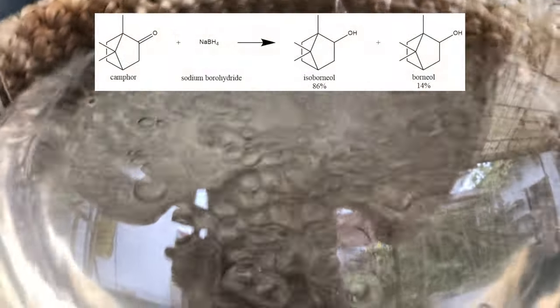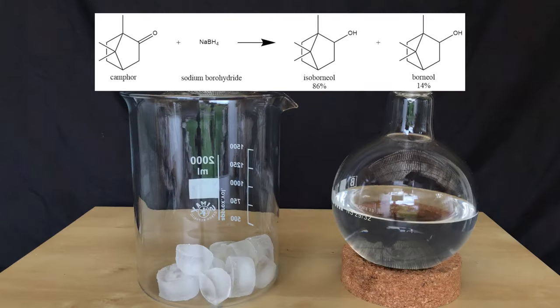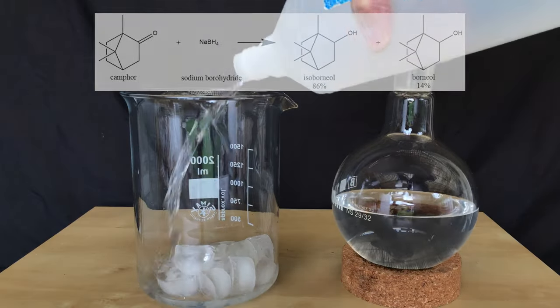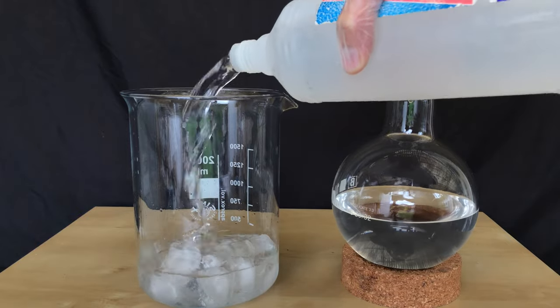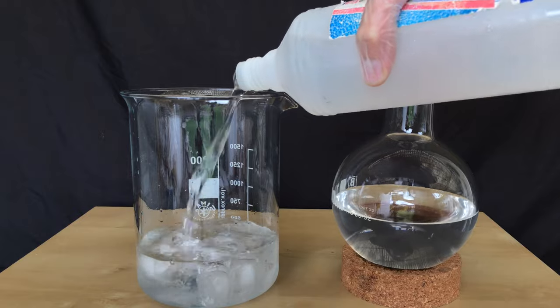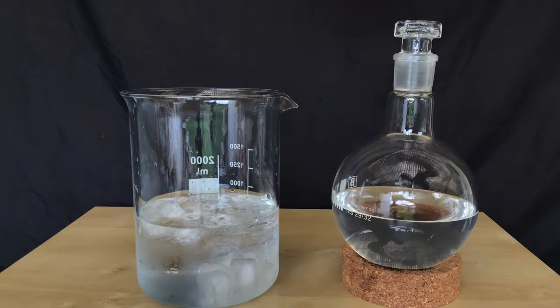The camphor is reduced by the sodium borohydride to mainly form isoborneol and also some borneol. Once the reaction was finished we needed to find a quick way to get the product out of the methanolic solution. A method that combines isolation and purification is to simply add the methanolic solution to ice water.